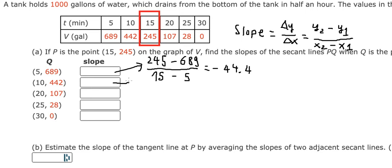Next we do the same technique. We use (10, 442), and this gives us about negative 39.4.